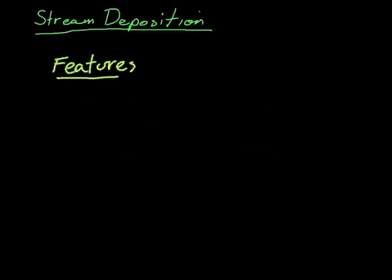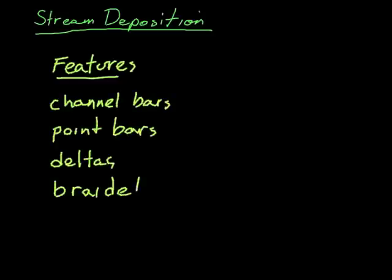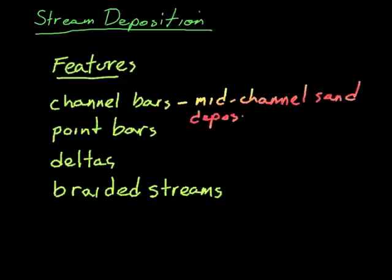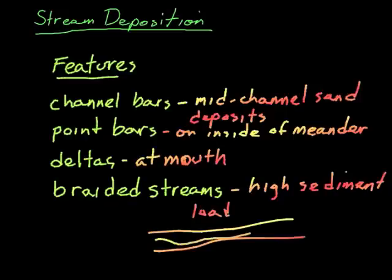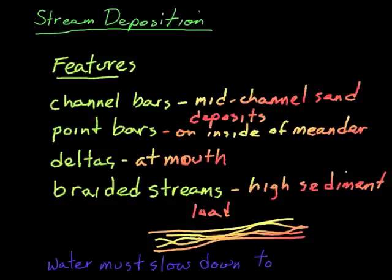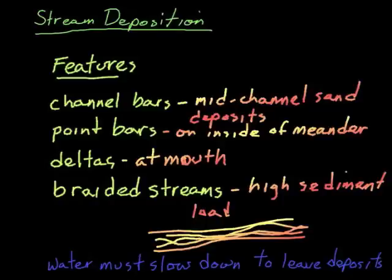What are some features of stream deposition? We have channel bars, point bars, deltas, and braided streams. Channel bars — sandbars or gravel bars — sit out in the middle of the channel. Point bars occur on the inside of a meander. Deltas occur at the mouth of a stream. Braided streams occur in high sediment load areas and have channels going every which way. The main key is: water must slow down to leave deposits. Whenever you get a deposit of sand, silt, or clay, water has slowed down. Thanks for watching.